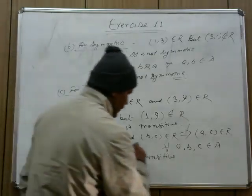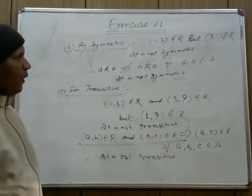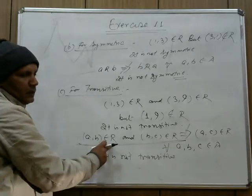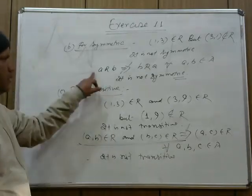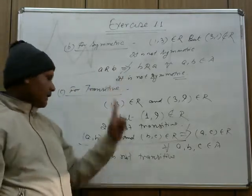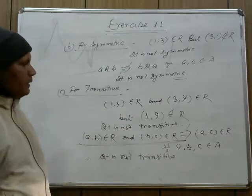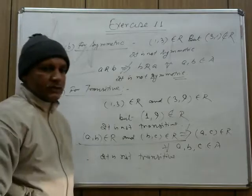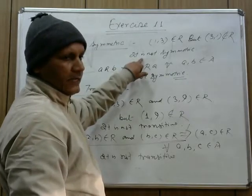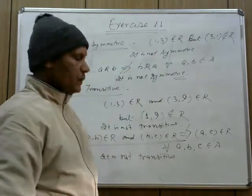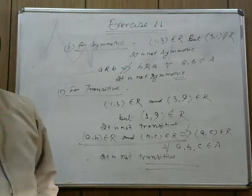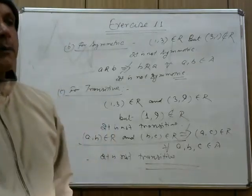Remember: A related to B and (A,B) belongs to R are the same thing — do not get confused. Both notations mean the same. So for question 1, we have proved that R is neither reflexive, nor symmetric, nor transitive. Similarly, we can do the other parts of this question.